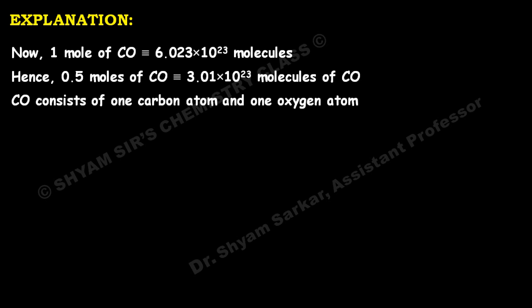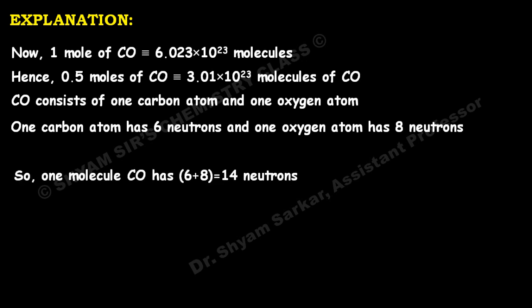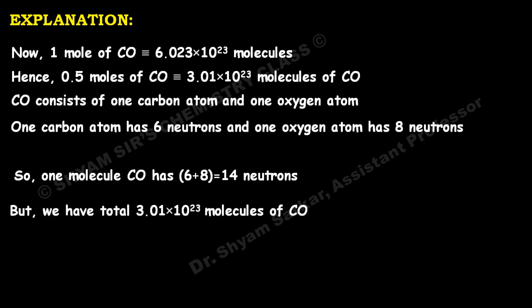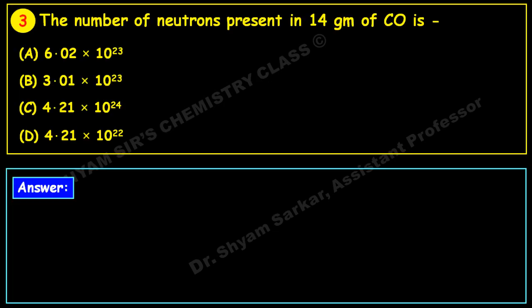CO consists of one carbon atom and one oxygen atom. One carbon atom has 6 neutrons and one oxygen atom has 8 neutrons, so one molecule of CO has 6 + 8 = 14 neutrons. Total neutrons = 3.01 × 10²³ molecules × 14 = 4.21 × 10²⁴ neutrons. This matches option C, so option C is the correct answer.